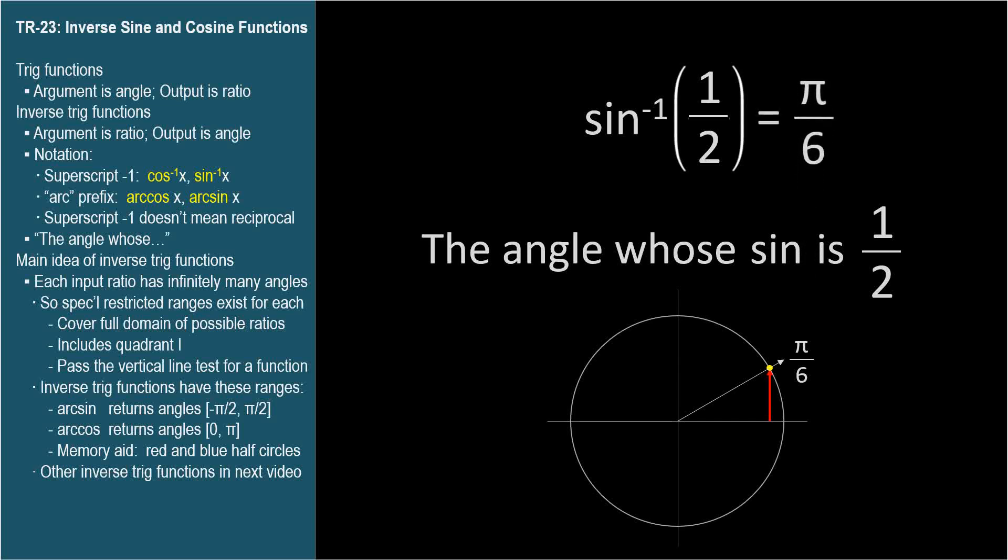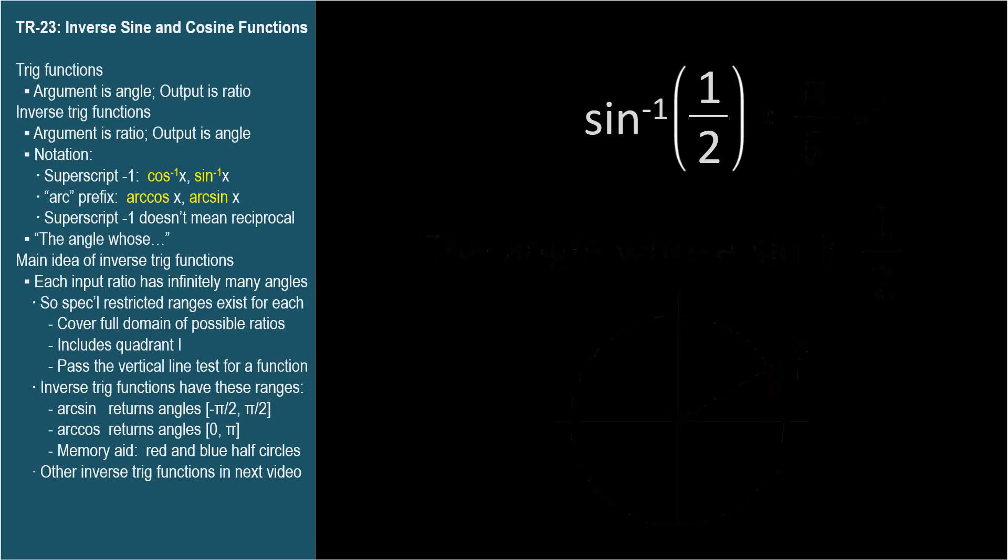Trig has a special notation that can help alleviate the confusion that comes with using a superscripted negative 1 that might be mistaken for an exponent or index. Putting the word arc in front of the trig function name means the inverse of that trig function. So the arc sine means inverse sine. Arc cosine means inverse cosine. And so on.